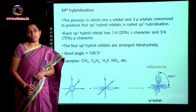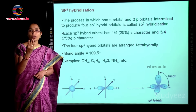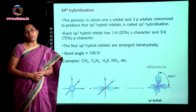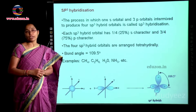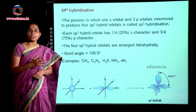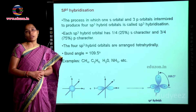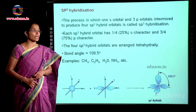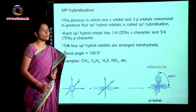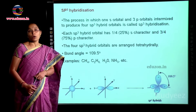sp³ hybridization is the process in which one s orbital and three p orbitals intermix to produce four sp³ hybrid orbitals. The four sp³ hybrid orbitals are arranged tetrahedrally with a bond angle of 109 degrees 28 minutes. Examples include CH₄, ammonia, water, C₂H₆, and all alkanes.